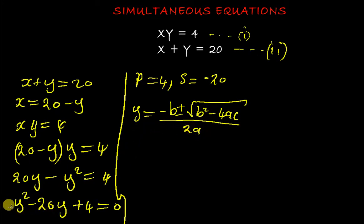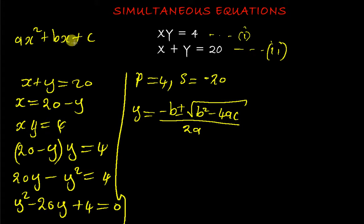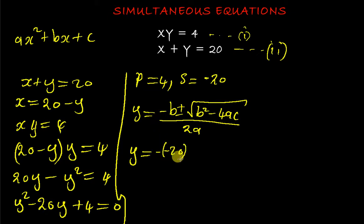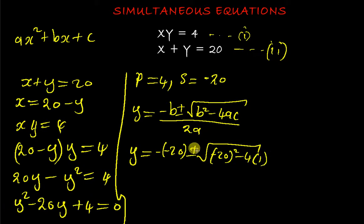The general form of a quadratic is ay² + by + c = 0. From our equation y² − 20y + 4 = 0, we identify: a = 1 (coefficient of y²), b = −20 (coefficient of y), and c = 4 (the constant).